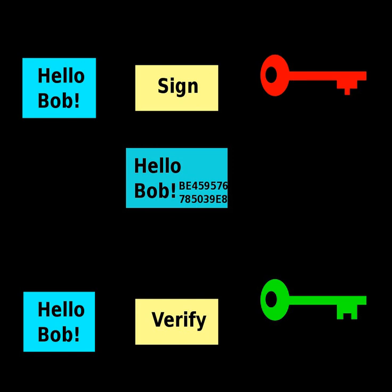To create a forgery, the attacker picks a random signature sigma and uses the verification procedure to determine the message M corresponding to that signature. In practice, however, this type of signature is not used directly — the message to be signed is first hashed to produce a short digest, that is then padded to a larger width comparable to N, then signed with the reverse trapdoor function. This forgery attack then only produces a padded hash function output corresponding to sigma, but not a message that leads to that value, which does not lead to an attack. In the random oracle model, hash-then-sign — an idealized version of that practice — is existentially unforgeable, even against a chosen plaintext attack.